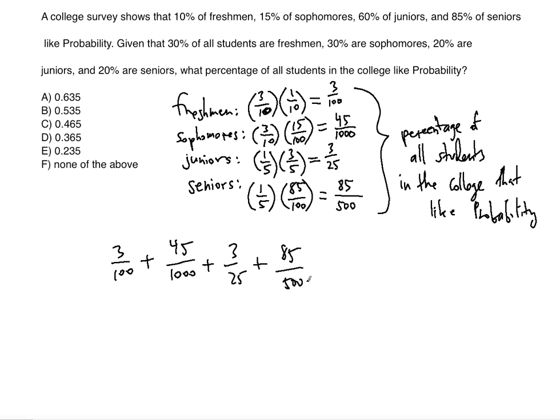Using a calculator to add these fractions together gives us 0.365.